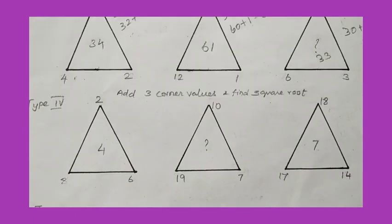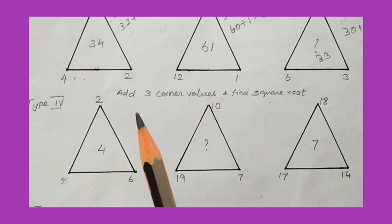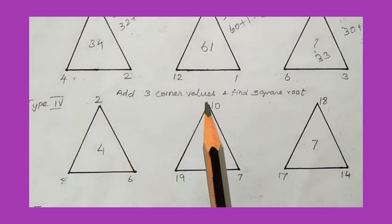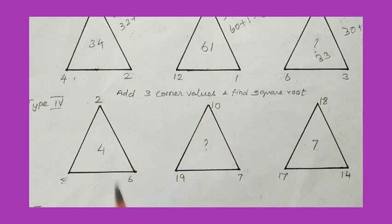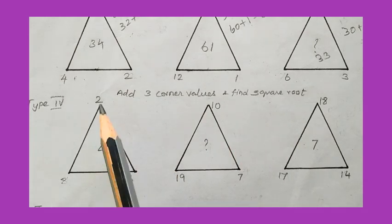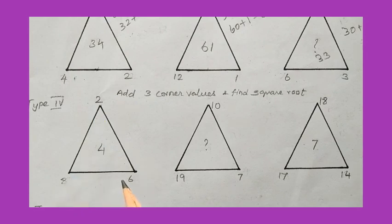Next is Type 4. Here we add the three corner values and then find the square root of the result. For the first triangle: 2 plus 8 gives 10, then 10 plus 6 equals 16. Taking the square root of 16 gives 4, which matches the inside value.